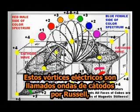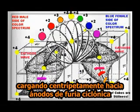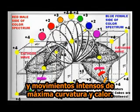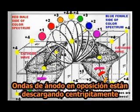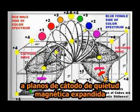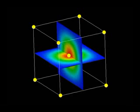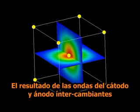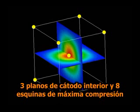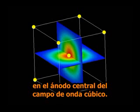These electric vortices are called cathode waves by Russell because they begin at cathode planes of stillness and are charging centripetally inwards towards anodes of cyclonic fury and intense motions of maximum curvature and heat. Anode waves in opposition are discharging centrifugally from compressed anode conditions to cathode planes of expanded magnetic stillness, zero curvature and absolute cold. The result of the cathode and anode waves interchanging from the six cathode faces of the cube, three interior cathode planes and the eight corners of maximum compression, is the creation of compressed hot spherical bodies at the central anode of the cubic wave field.